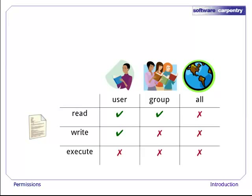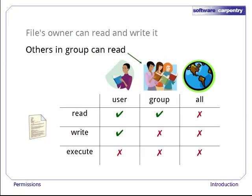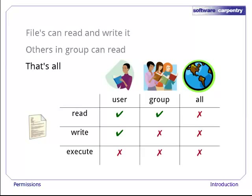For example, one file's permissions might be on or off as shown in this table. This means that the file's owner can read and write it, but not run it. Other people in the file's owning group can read it, but not modify it, and nobody else can do anything with it at all.